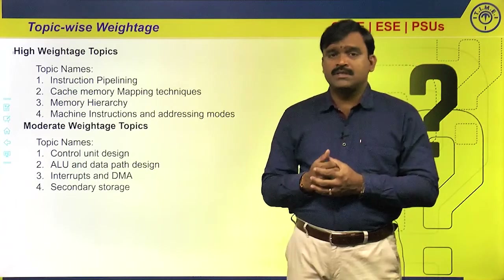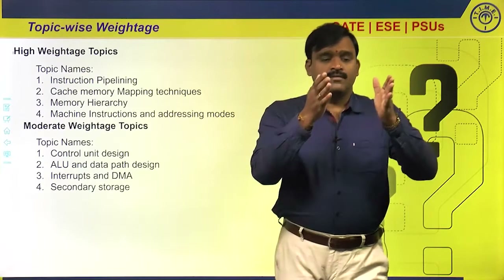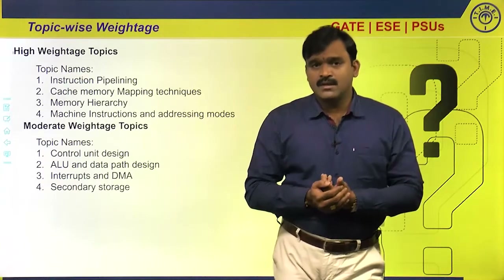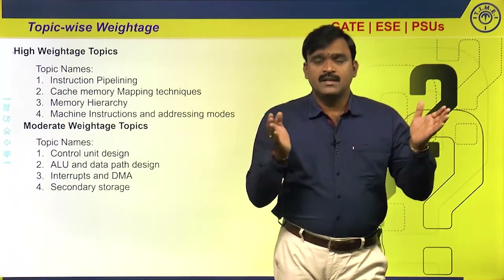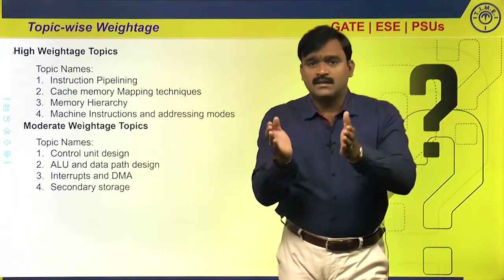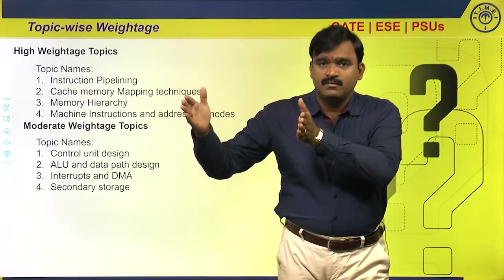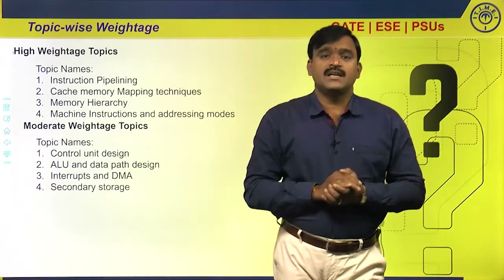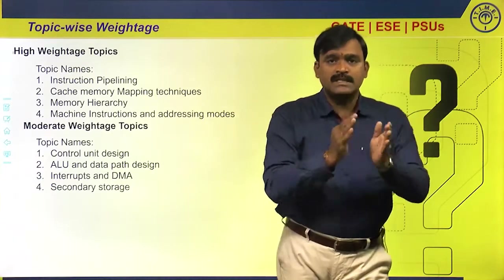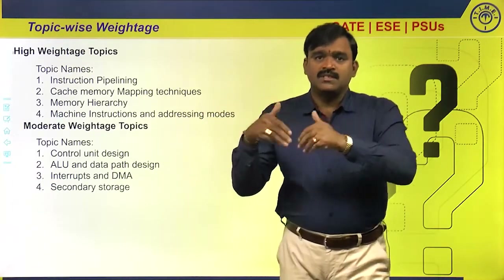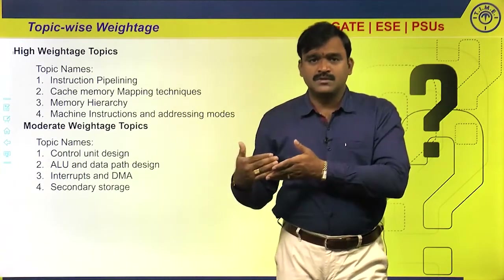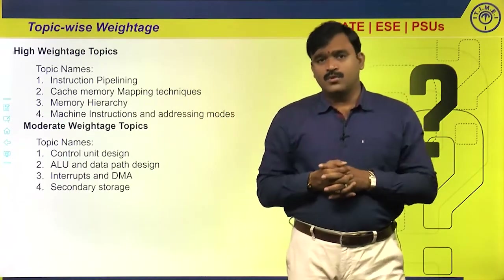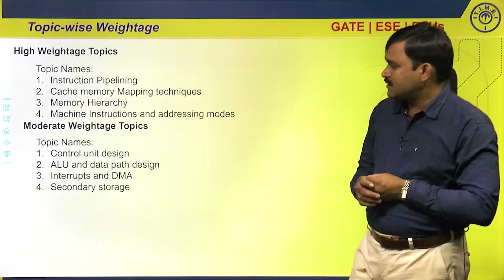For machine instructions and addressing modes, we discussed questions on instruction formats. For example, if there are this many three-address instructions and two-address instructions, how many one-address instructions can be formulated? Given an instruction format with a certain opcode and number of registers, how many bits are reserved for the immediate operand? In a 32-bit instruction with a register field (6 bits for 64 registers) and memory field (20 bits for 1 MB), subtract from 32 to get opcode bits.